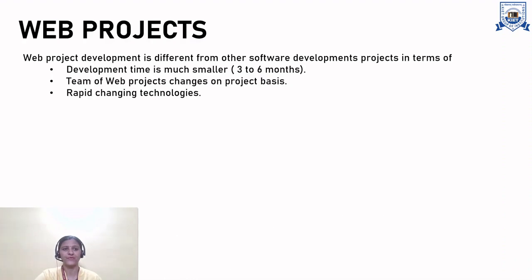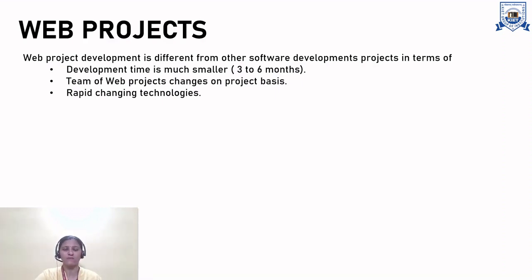The next topic is web projects. What is a web project? There are other types of project development, like software development. Web project development is different from other software development projects in the following ways: development time is much smaller for web projects, around three to six months; the team of a web project changes on a project basis; and rapid changing technologies are required.